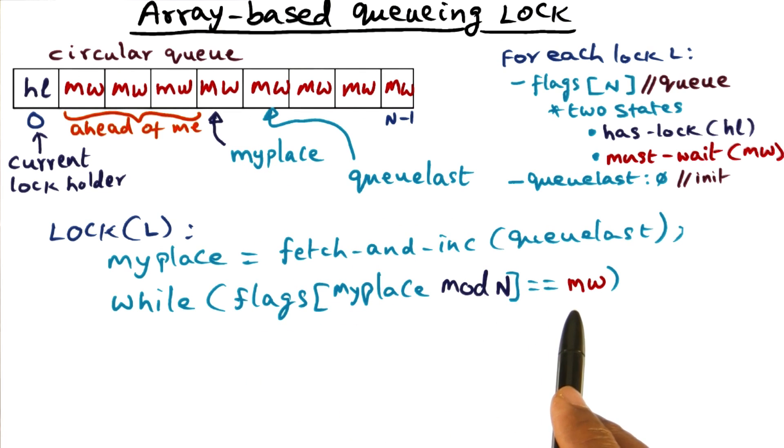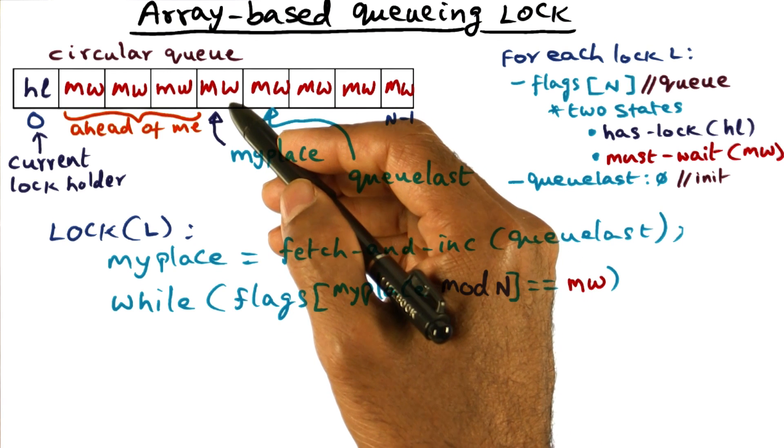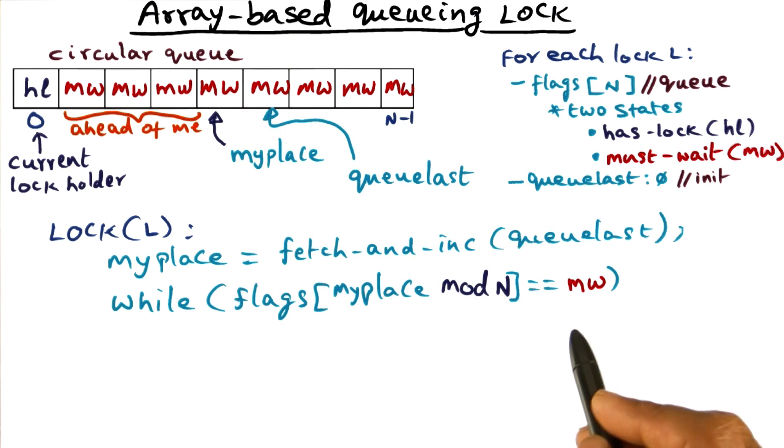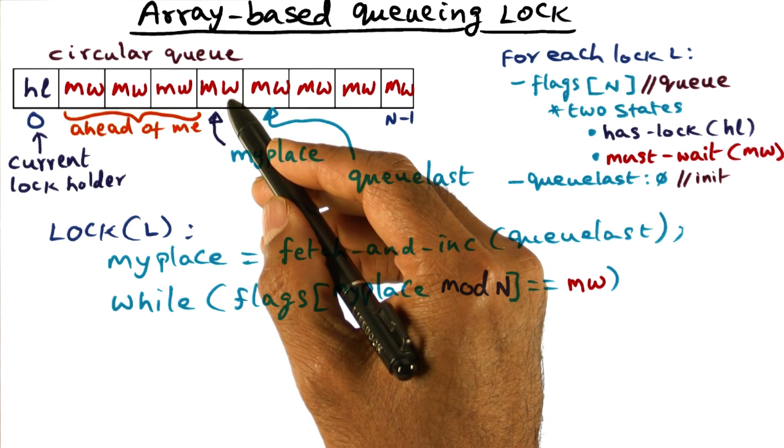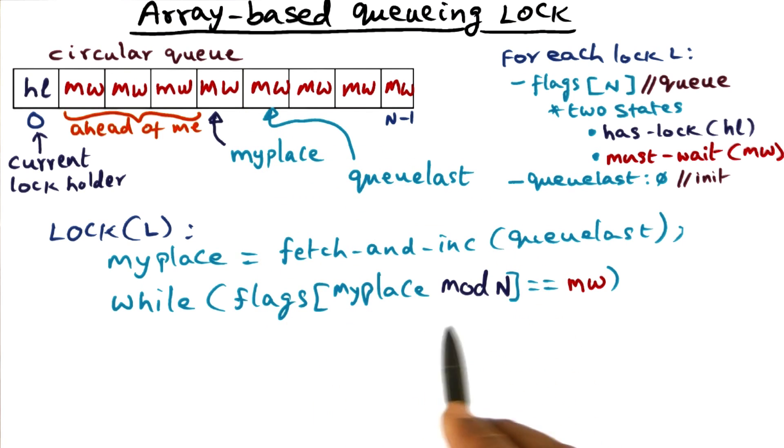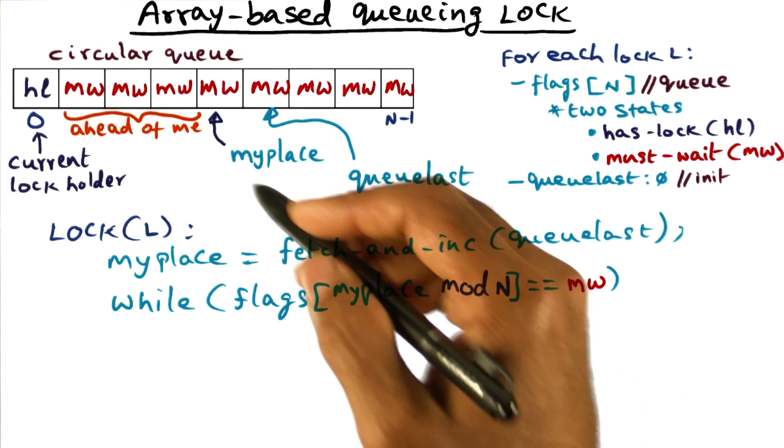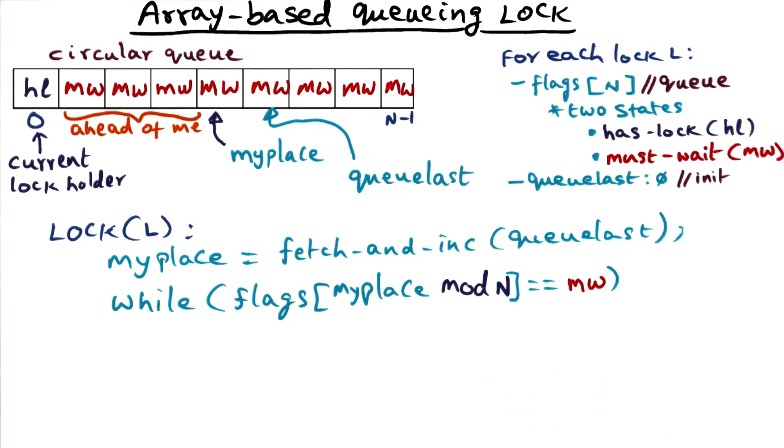And I'm going to wait for this location changing its value from MW to HL. So that's the spin loop that you see here. So basically, once I have marked my position, I'm going to wait on my position becoming HL to know that I've acquired the lock. And I will get it eventually because that's the way this algorithm is supposed to work.